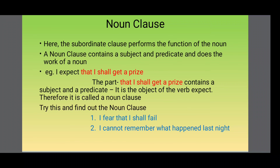Now we can move on to the first category: the noun clause. In this case, the subordinate clause performs the function of a noun — it contains a subject and a predicate and carries out the work of a noun. Look at the sentence: 'I expect that I shall get a prize.' The part 'that I shall get a prize' contains a subject and a predicate and is the object of the verb 'expect.' Therefore, it is a noun clause.